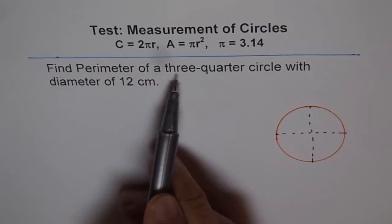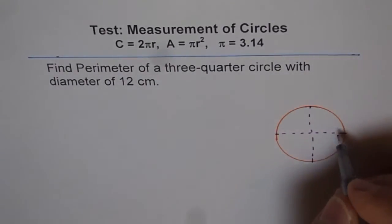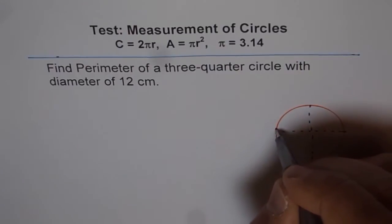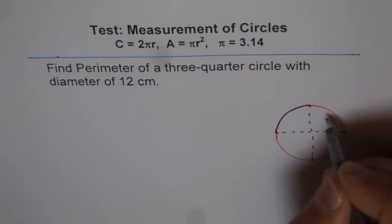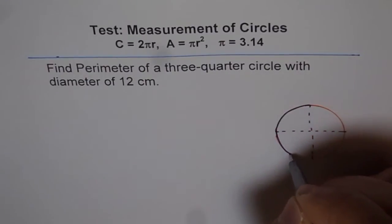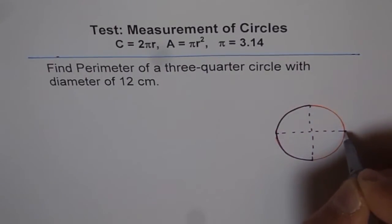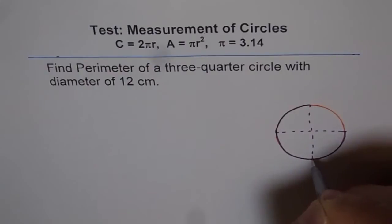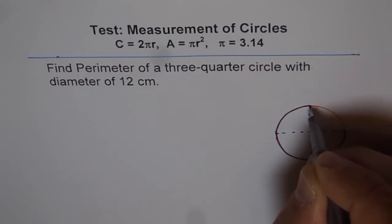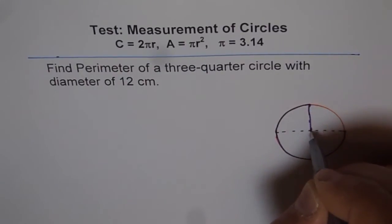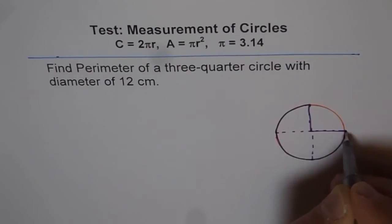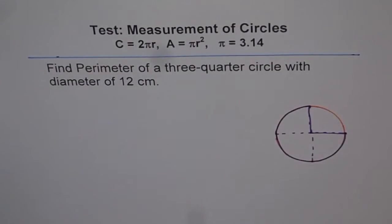We want to find perimeter of three quarters. So that means we want one quarter. We can use second quarter and the third quarter. We don't want the fourth quarter. So when you cut it out you get these two sides. So that becomes your three quarter circle. Do you see that?